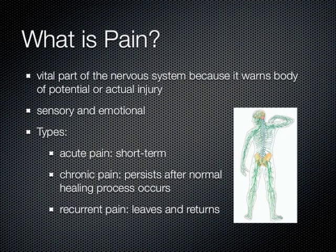I'd like to begin by defining a few terms. The first is pain, which describes the unpleasant feeling that is a vital part of the nervous system because it warns the body of potential or actual injury. It is both a sensory and emotional experience, meaning psychological factors like mood, beliefs, or past experiences can affect an individual's perception of pain. Types of pain include acute pain, which is short-term; chronic pain, which persists after the normal healing process; and recurrent pain, which leaves and returns.